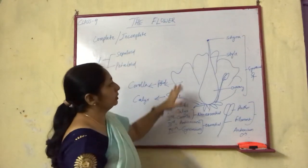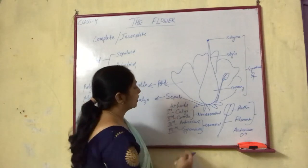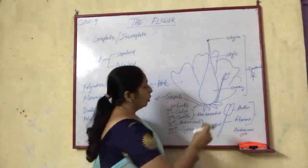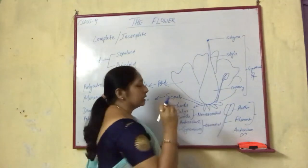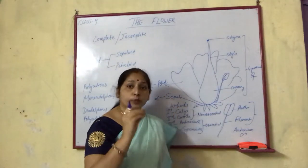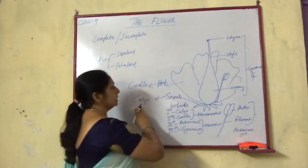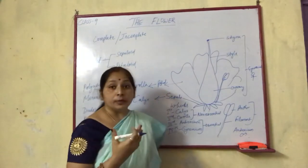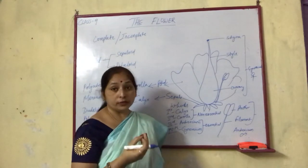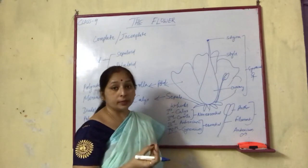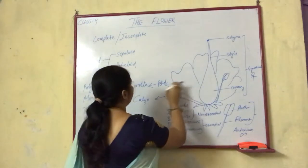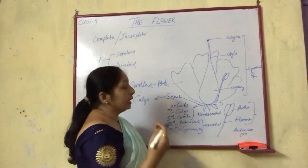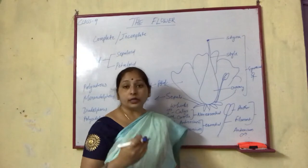As you can see in the diagram, these leaf-like structures are termed as calyx or sepals. The group of sepals is termed as calyx. Next to this is the colored part of the flower — these are the petals, and the group of petals is termed as corolla.